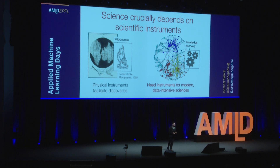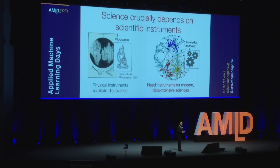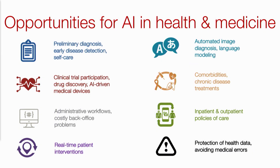Science crucially depends on the existence of scientific instruments. While in the past those instruments were primarily physical devices such as microscopes that facilitated discoveries, in today's world what we need are new kinds of instruments suitable for modern data-intensive sciences. I envision those tools will be optimized for knowledge discovery from data, with lots of opportunities in sciences, health, and medicine — from preliminary disease diagnosis and identifying best clinical trials for patients, to addressing administrative workflows and long-term chronic disease treatments.